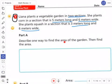Describe one way to find the area of the garden, then find the area. So basically for part A, you just have to describe what would you do to find the area of the whole thing.